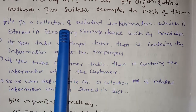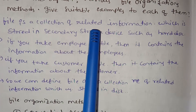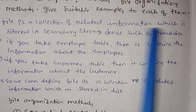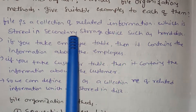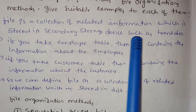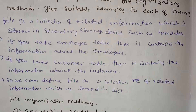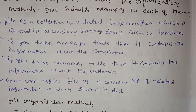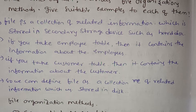A file is a collection of related information which is stored in a secondary memory device, such as a hard disk. You can store it in secondary memory.